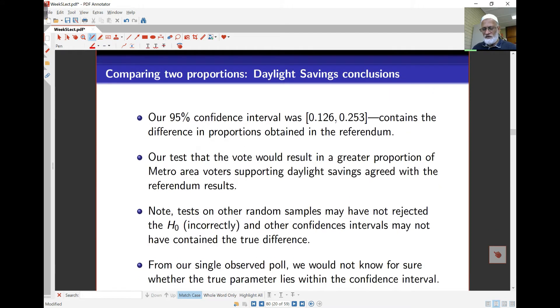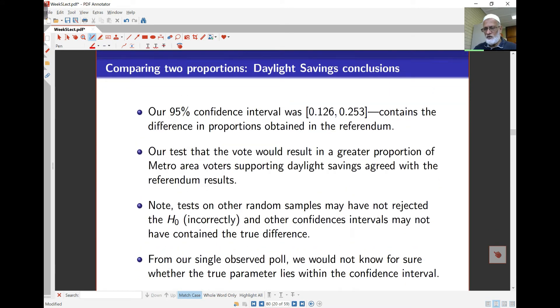The 95% confidence interval we saw earlier here is 0.126 and 0.253. Here notice that 0 is not in the interval. Earlier we rejected the hypothesis that the two proportions were equal. So if you actually reject the null hypothesis at the 5% level, or 2.5% level if it's one-sided, then the 95% confidence interval for the difference will not contain 0.